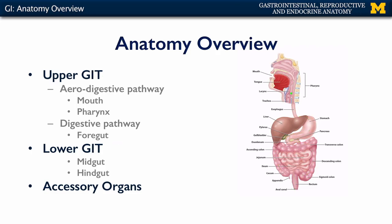We can also conceptualize there being an aerodigestive portion of the pathway, which would start with the mouth, the oral cavity, and the pharynx, or the throat. This would be a common pathway for both the respiratory and the digestive systems. And then there's the digestive pathway that would be everything beyond — from the esophagus down to the anal canal.